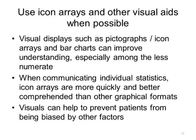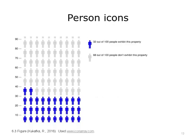Another helpful strategy is to use icon arrays and other visual aids when possible. Visual displays such as bar charts and icon arrays can improve understanding, especially among the less numerate. A growing body of research has shown that when communicating individual statistics, icon arrays are more quickly and better comprehended than other graphical formats. They can also help prevent patients from being biased by denominator neglect, framing effects, and the influence of anecdotes. Part of the appeal of icon arrays is that they visually represent the risk as a frequency rather than a probability, while simultaneously conveying both the numerator and the denominator.